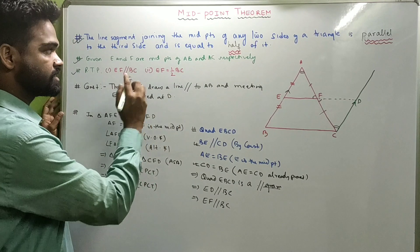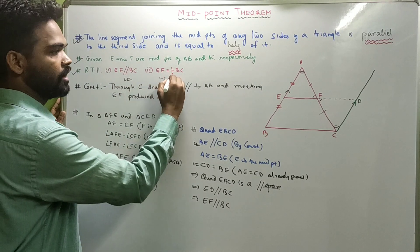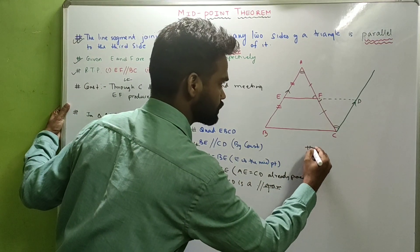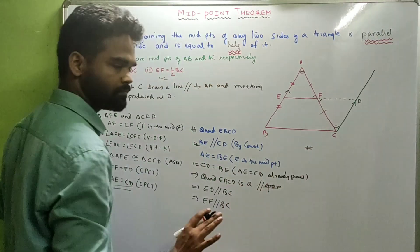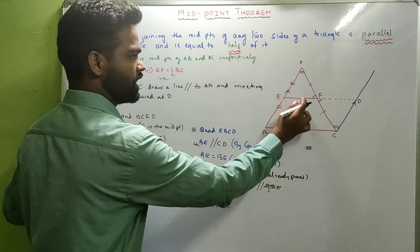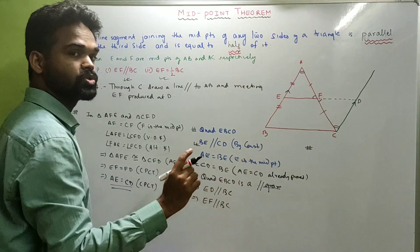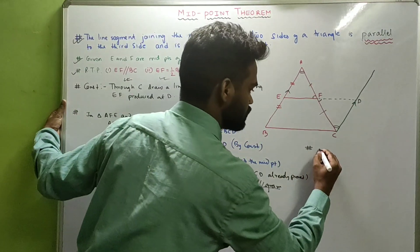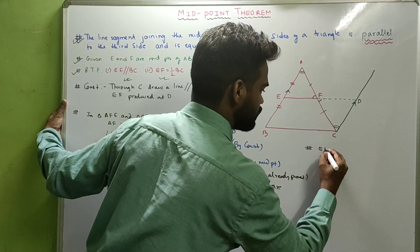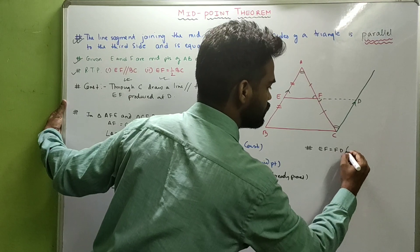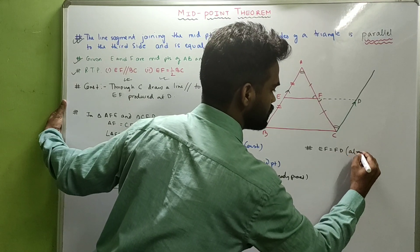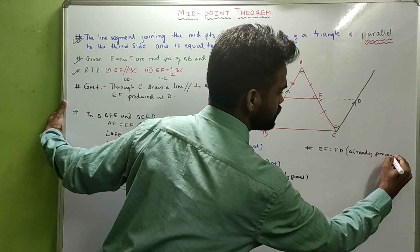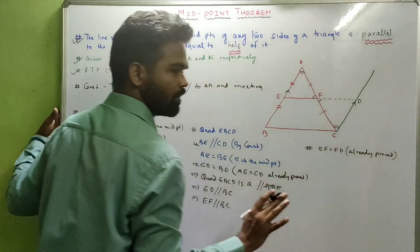Now let us see the second part. We already know that EF equals FD — already proved. And we have just now proved that EBCD is a parallelogram.